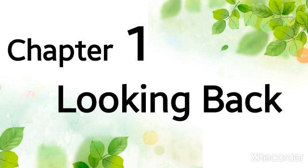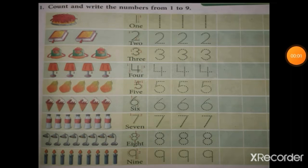Our first chapter is 'Looking Back.' In this chapter, we will study what we have studied in the previous year. Question number 1: Count and write the numbers from 1 to 9. How many cakes are there? 1. So we will write here 1. And what is the spelling of 1? O-N-E. 1.